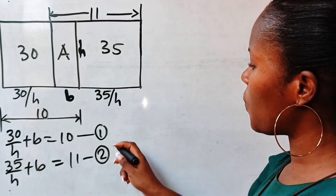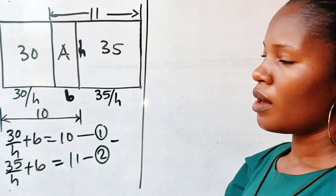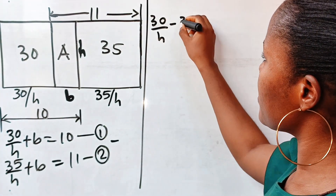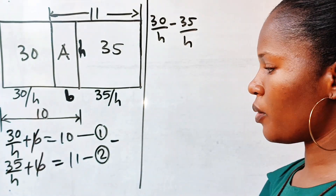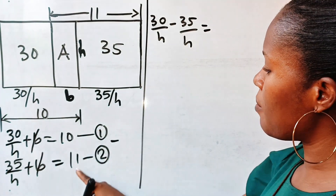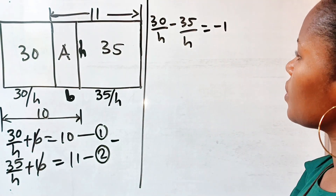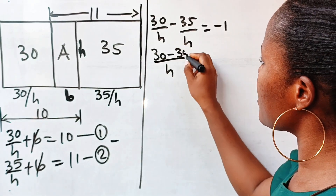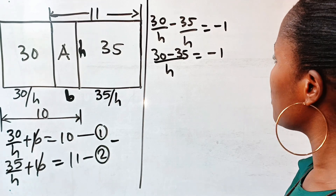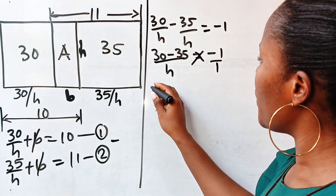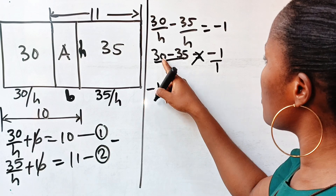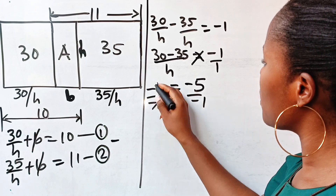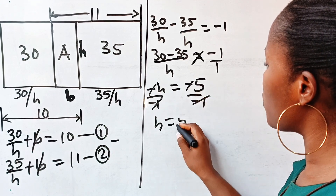Now equation 1 minus equation 2: we will have 30 over h minus 35 over h. b minus b is 0, equal to 10 minus 11 which is minus 1. With common denominator, 30 minus 35 over h equals minus 1. Cross-multiplying, minus h equals minus 5, so dividing by minus 1 gives h equals 5.